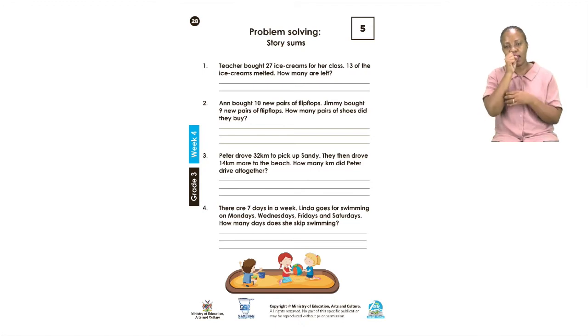Let's move on to number four. Number four says there are seven days in a week. Linda goes for swimming on Mondays, Wednesdays, Fridays and Saturdays. How many days does Linda skip swimming? Now this one is very interesting because we are told the days that Linda goes swimming. We know that she goes on Mondays, Wednesdays, Fridays and Saturdays.